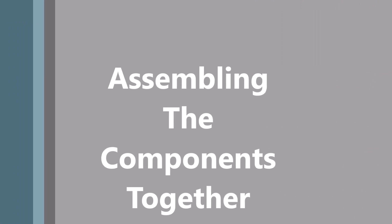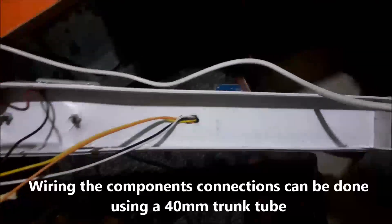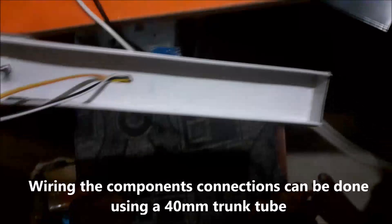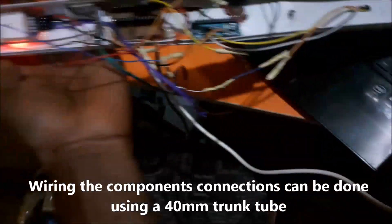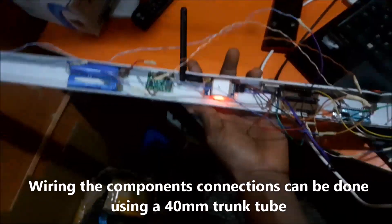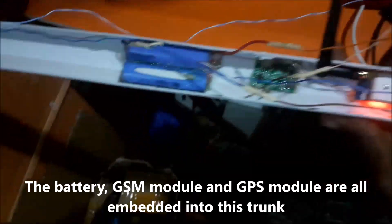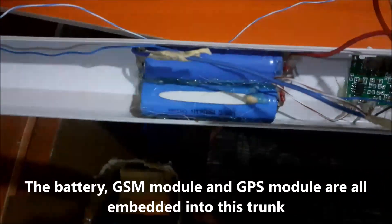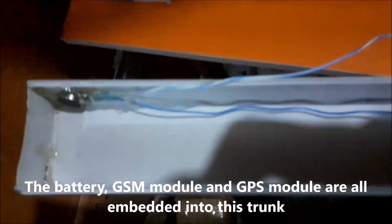Assembling the components together: wiring the component connections can be done using a 40mm trunk tube. This fits perfectly all the components. The rechargeable battery, GSM module, and GPS module are all embedded into this trunk, making it protected from dust and moisture.